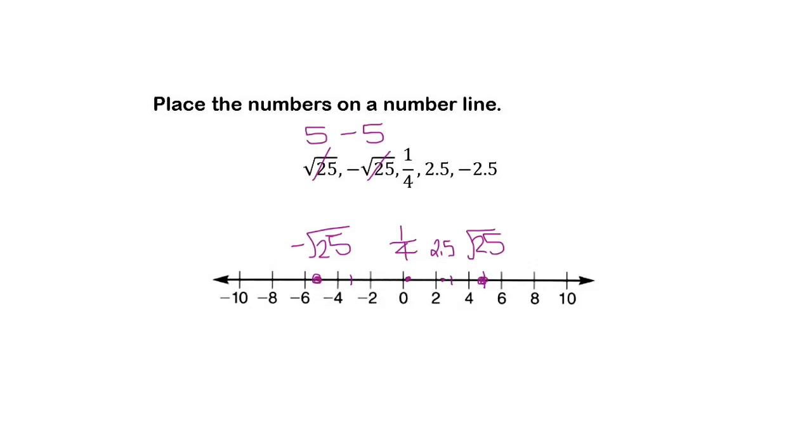And then I have negative 2.5, so that's in between negative 2 and negative 3. Here's negative 3, halfway would be right here. And this point right here is negative 2.5.